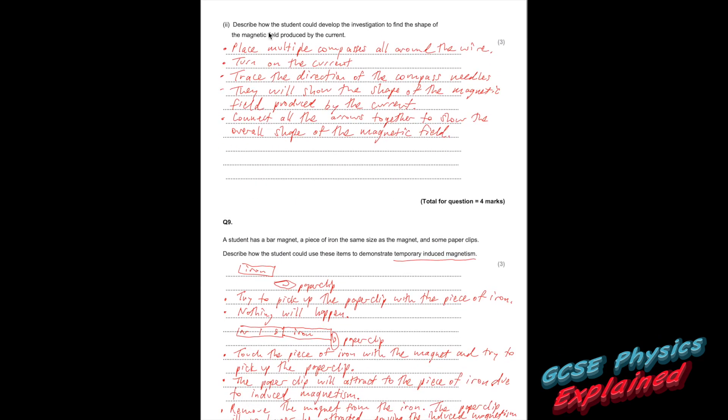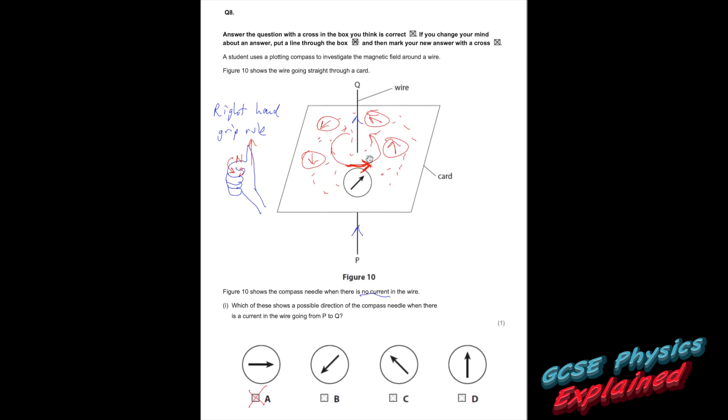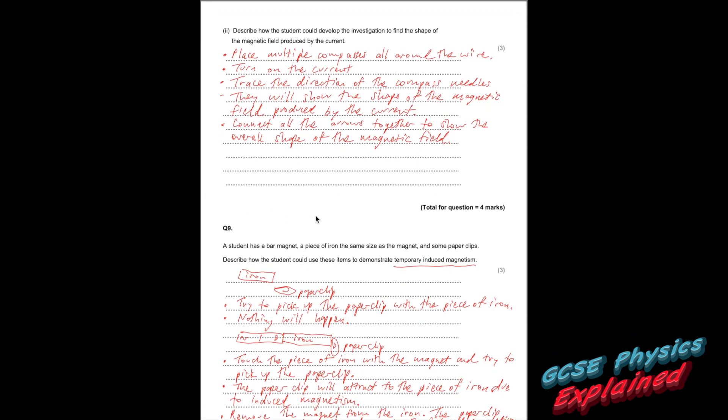Part 2. Describe how the student could develop the investigation to find the shape of the magnetic field produced by the current. Okie dokie. So what you want to do is place several compasses around the wire. Then turn the current on through the wire. And each of the compasses will start to line up with the magnetic field. So if you were to just draw arrows the way that all the compasses are pointing. And then you just want to connect those lines all together. And that would show you the shape of the magnetic field and the direction.